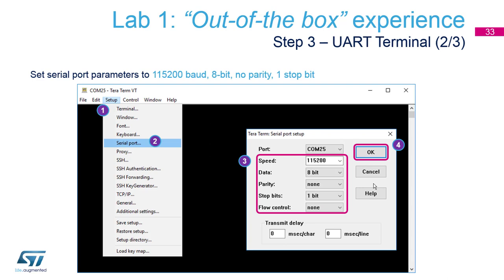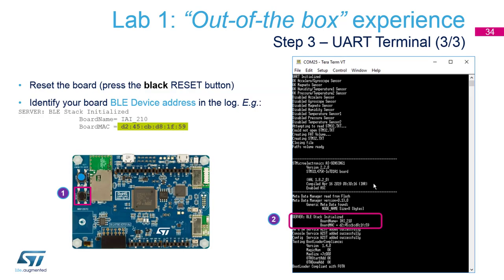Once your UART terminal is connected, press the black reset button and you should see the startup log of the application. In the log, look up your Bluetooth device address — this will be used to identify your specific device when connecting to it using the smartphone.